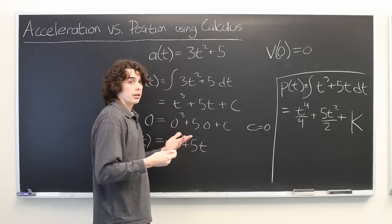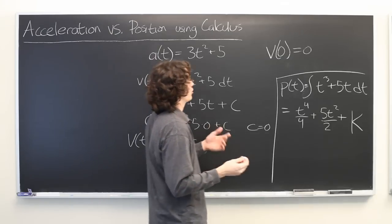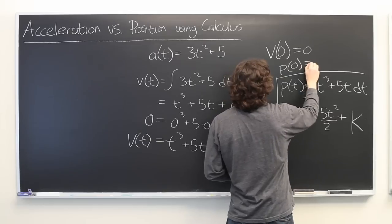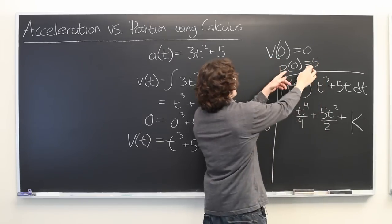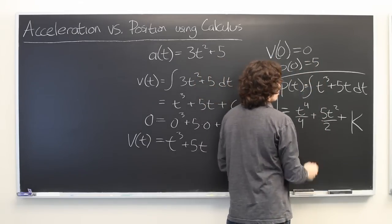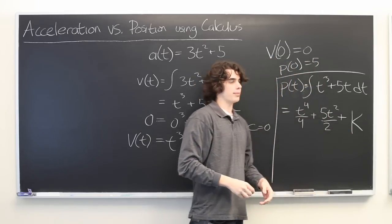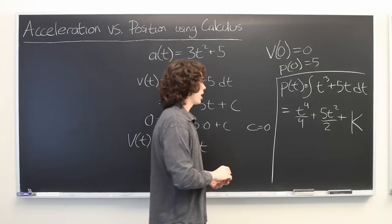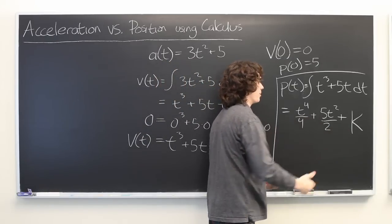And, again, if you are given an initial condition, for example, something like p of 0 equals 5, you can plug these pieces of information into this equation and determine what k is. But, if you are not given an initial condition, then this is all you can say about the position function.